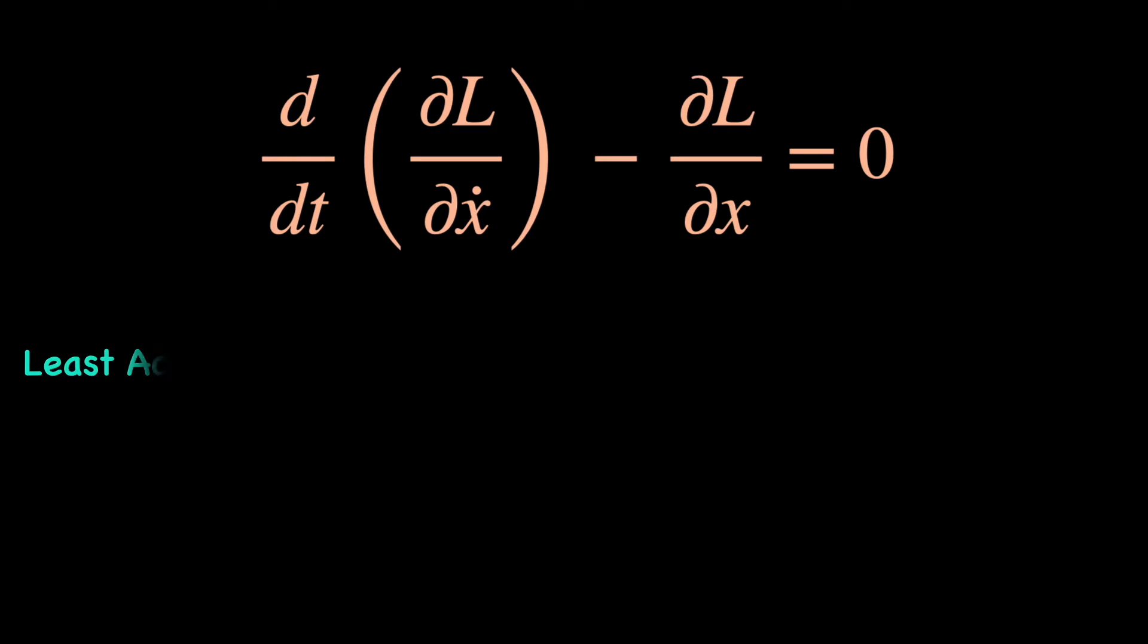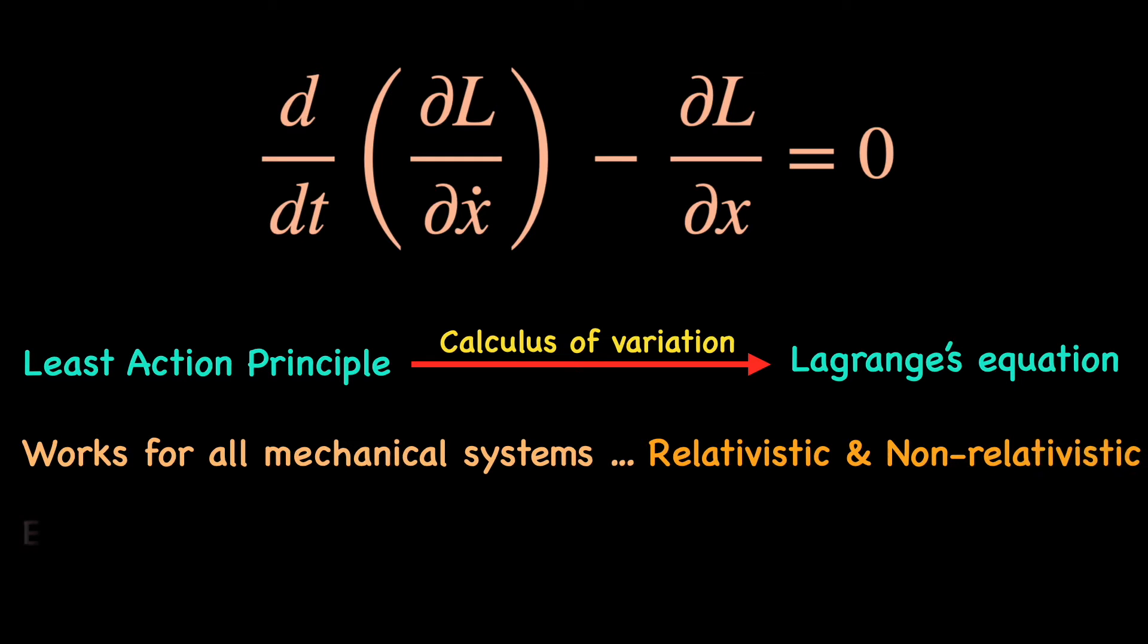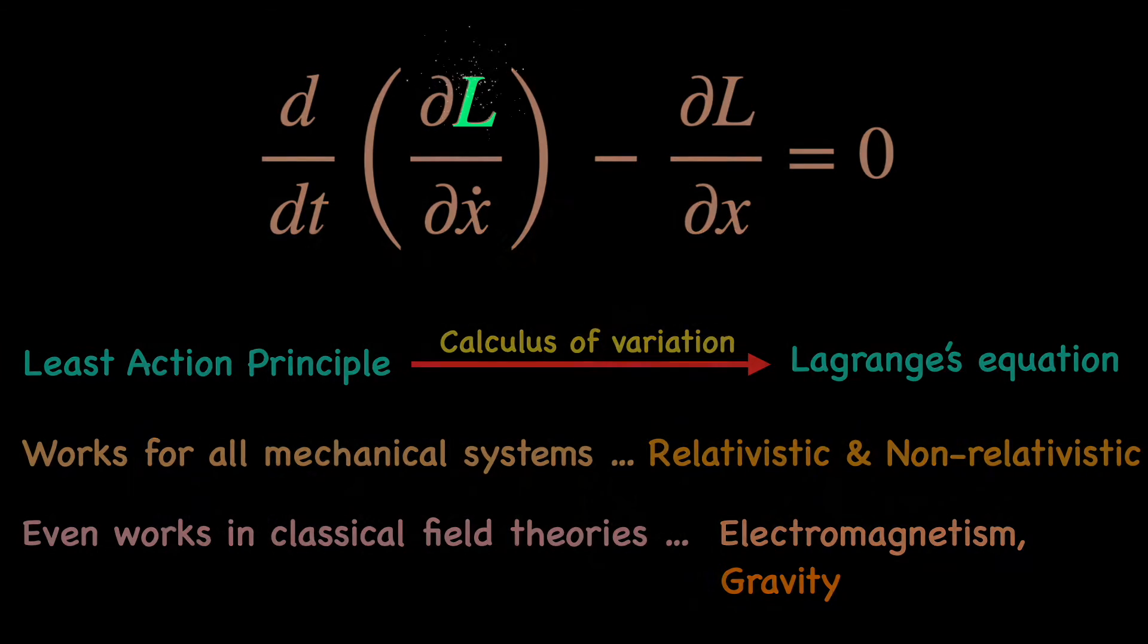The algorithm leading from the action principle to the Lagrange's equation is so generic in nature and conceptually so fundamental that it applies to both relativistic and non-relativistic mechanical systems and with certain generalizations can even be used for classical field theories like electromagnetism, gravity, etc. All we need is to figure out the form of the Lagrangian for a given system.